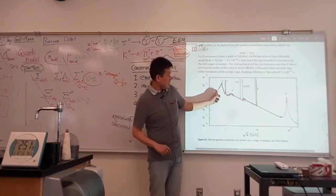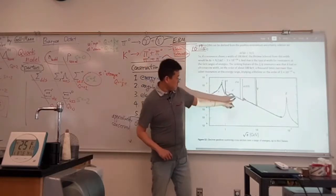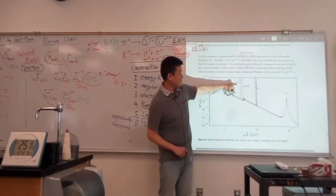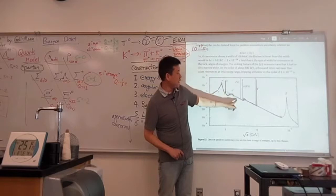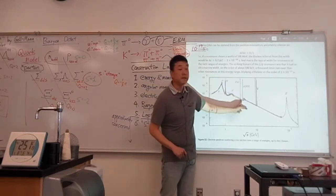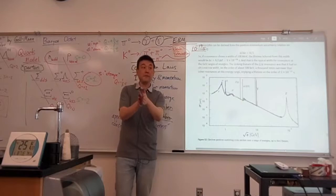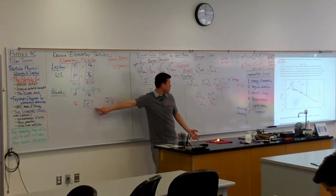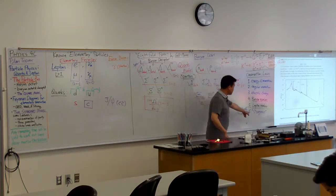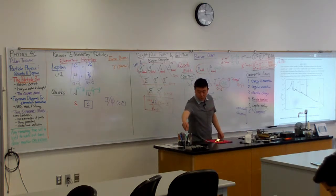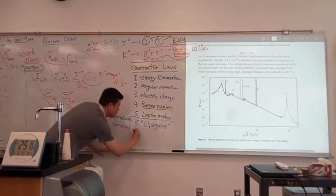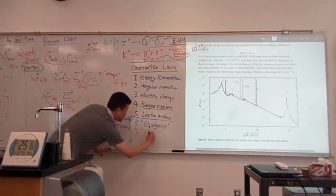And this peak here, very sharp, very narrow peak, that is associated with the J-psi particle, is what they discovered. And it's a very sharp, very narrow peak because the charm quark, it's a new kind of quark. So apparently, in addition to strangeness, there's one more quantity that now needs to be conserved. Now we need to conserve charmness, or charm.